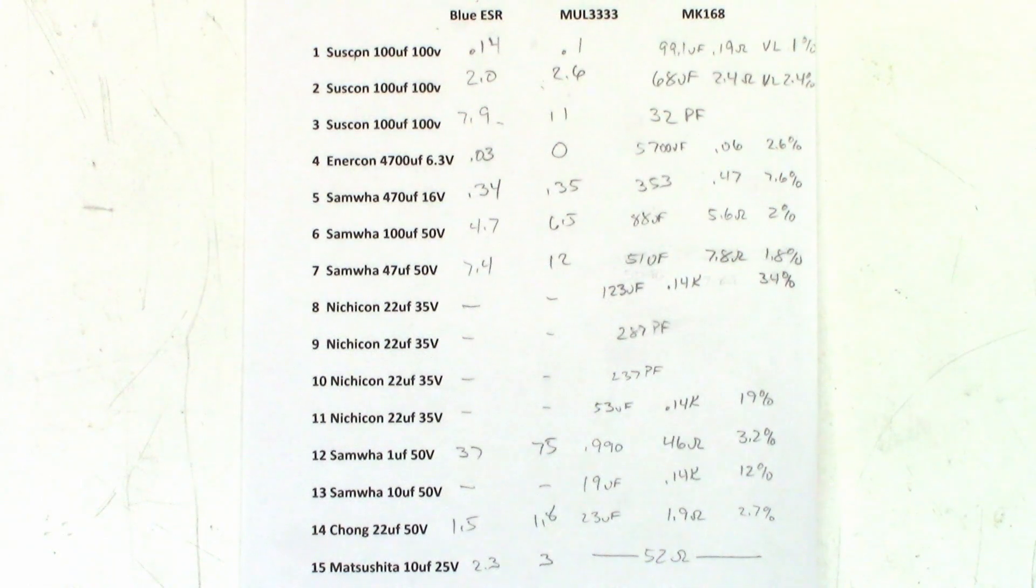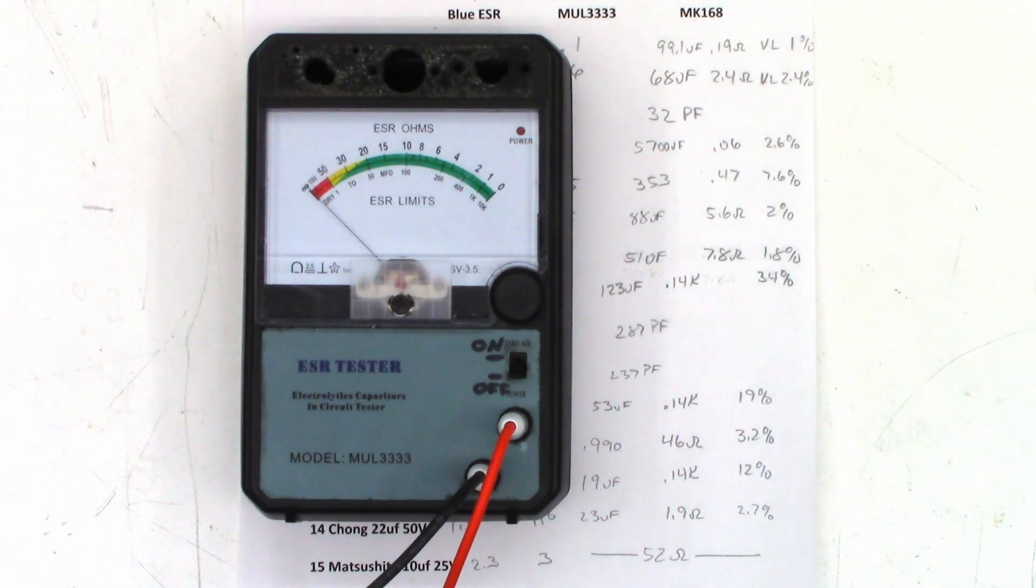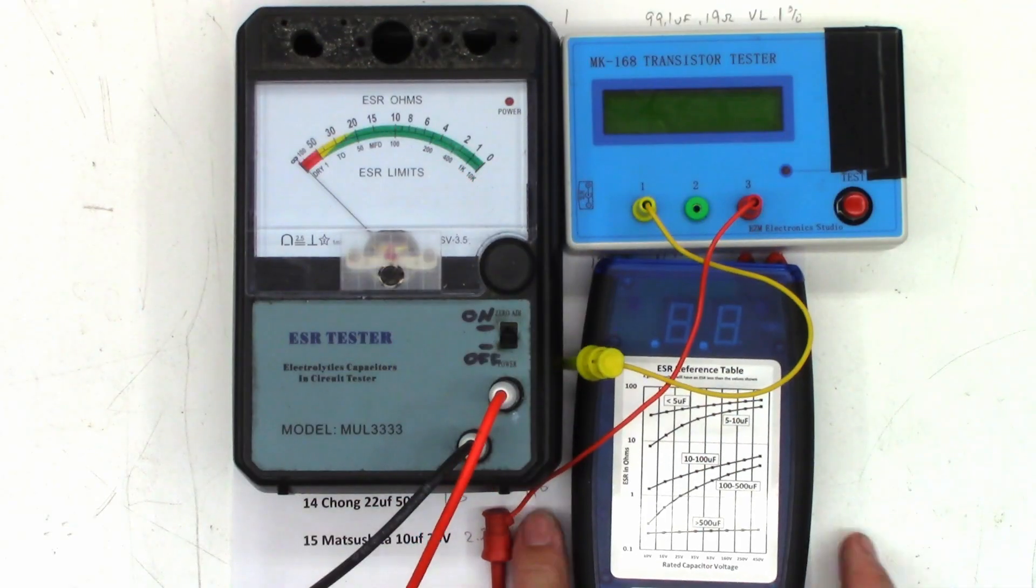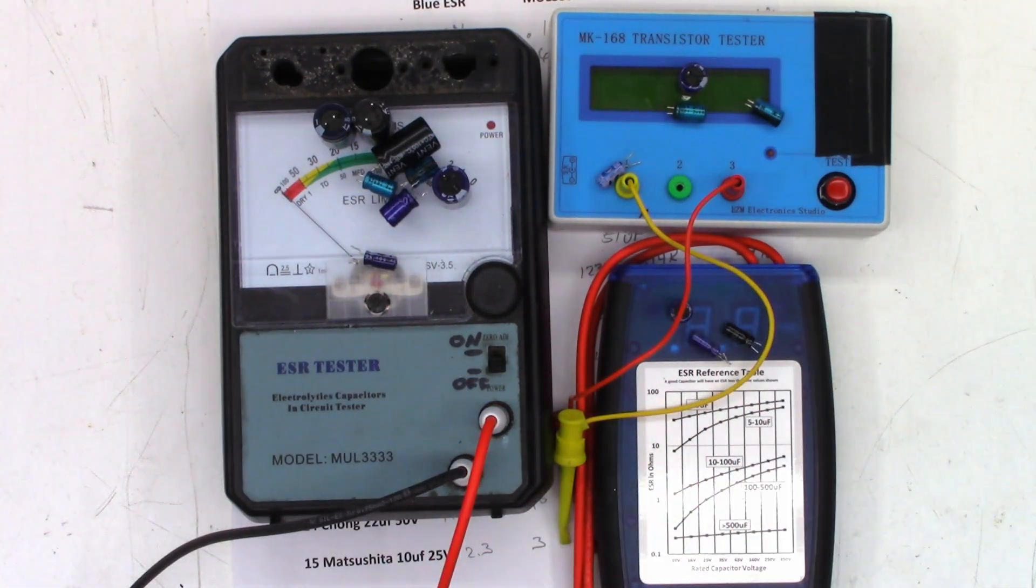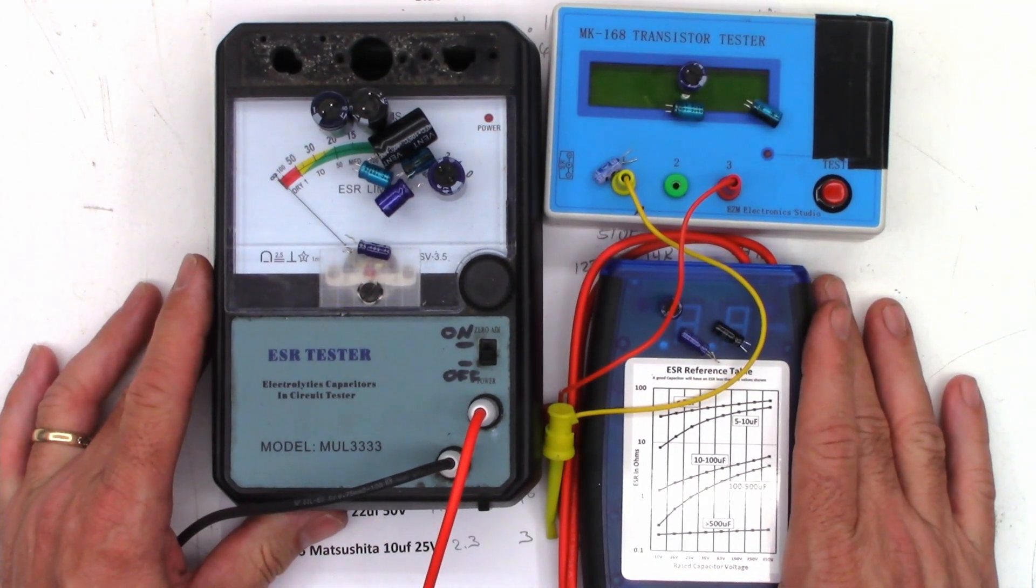Almost everything read high, and once you get down this low it's extremely hard to tell what the value is, especially like this one, 0.03. The MK168 read 0.06. Anyhow, that's it. Somebody asked me to do a comparison of the three meters and I actually did the comparison. So we certainly got the MUL 3333 right there, we've got the MK168, and we've got the Blue ESR tester, and then here are all the capacitors that got tested.